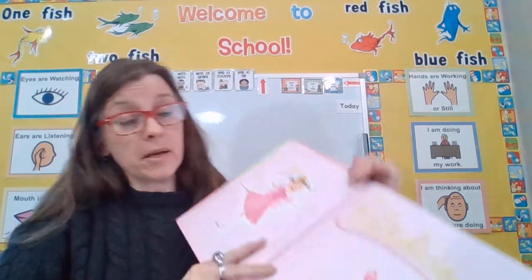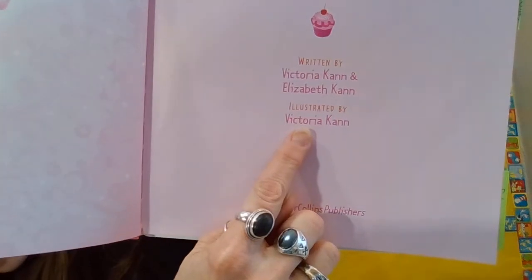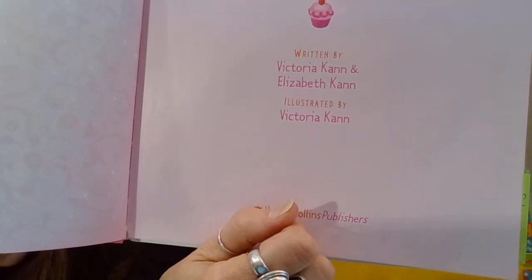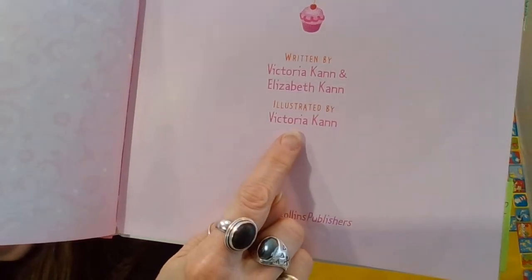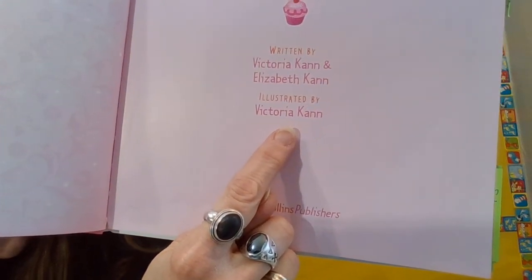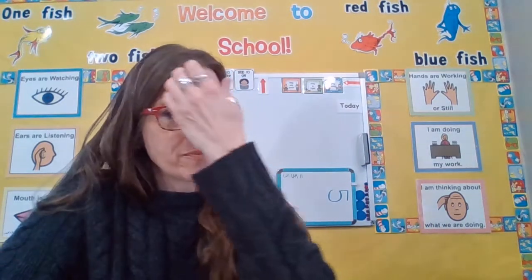Can you tell someone, what does the author do? Yes, the author writes the words. Well, I have to look inside of my book to find the illustrator. Right here it says the illustrator is Victoria Kahn. Can you touch the illustrator's name please? Yes, right there — Victoria Kahn. Now, can you remember, what does the illustrator do? Yes, the illustrator draws the pictures.